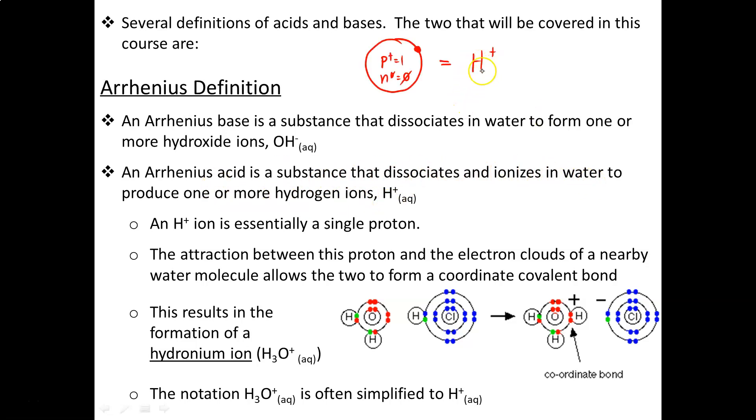Meanwhile, an Arrhenius acid is a substance that dissociates and ionizes in water to produce one or more hydrogen ions. Now it's important to note that the H+ ion is essentially a proton. If you recall, the hydrogen atom has one electron, one proton, and if you're talking about protium has no neutrons. So when you have an H+ charge, a positive charge means it's lost an electron. And because it has no neutrons, essentially an H+ ion is a proton.